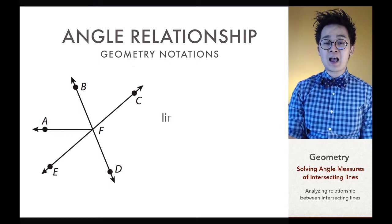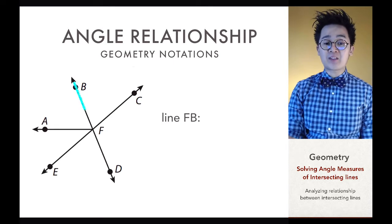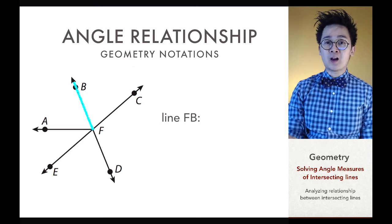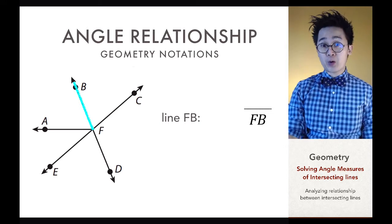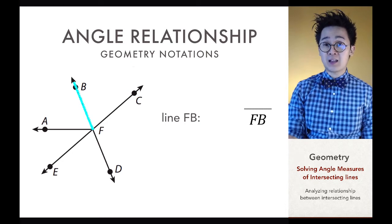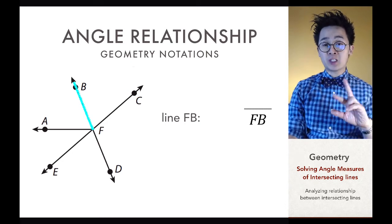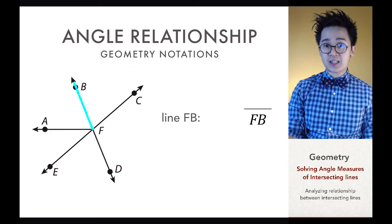Let's start with how to write a line in geometry. If we're working on line FB, represented by the line from point F to point B, we write it in symbol form using the line symbol over the two letters. This is line FB — or you can also write it as line BF — and it doesn't matter if you interchange the two letters; they will still be the same. This is how we write line segments in geometry.